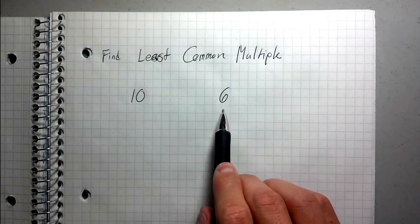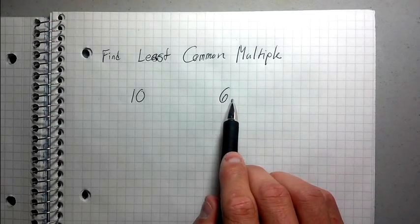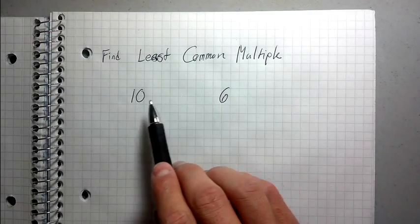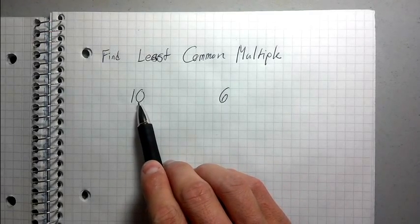So for example, like the multiples of 6 would be 6, 12, 18, 24, et cetera. Right? And then multiples of 10 would be 10, 20, 30, 40. Right?